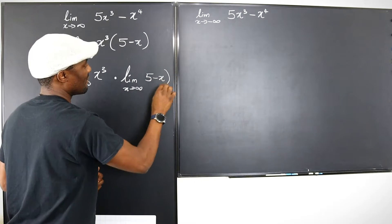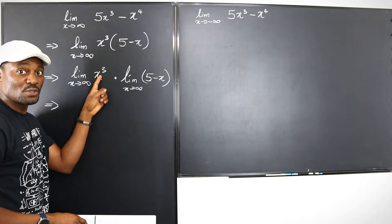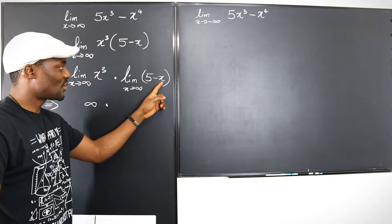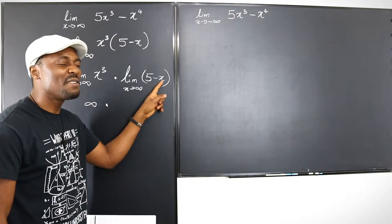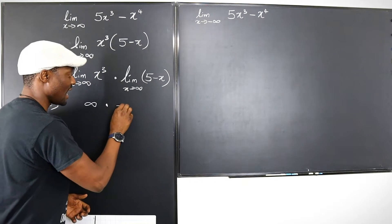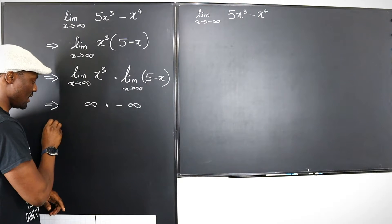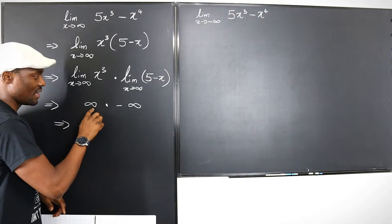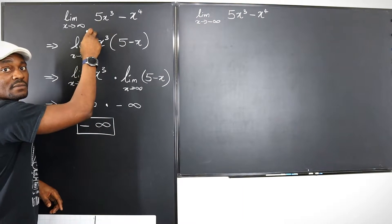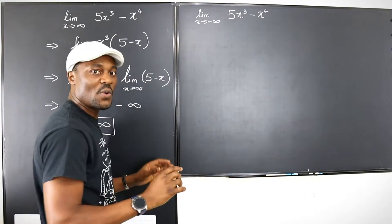As x goes to infinity, x cubed goes to infinity. And as x goes to infinity, 5 minus x means subtracting a very large number from 5, giving negative infinity. We can multiply these: negative times positive gives negative, and infinity times infinity is infinity — so the answer is negative infinity. That's the solution to this limit.